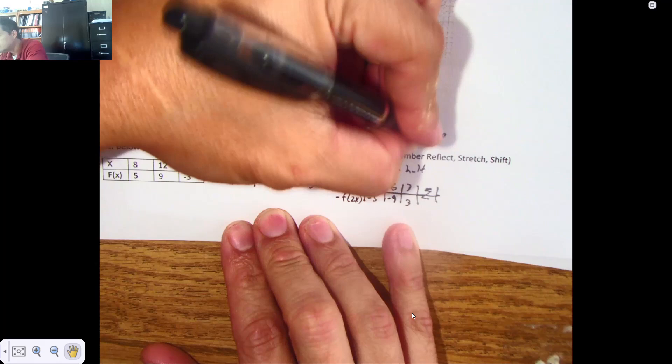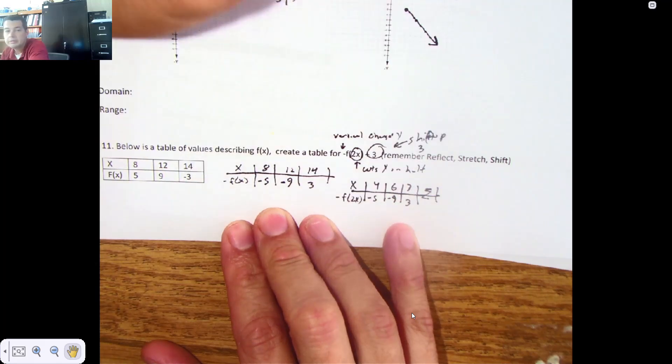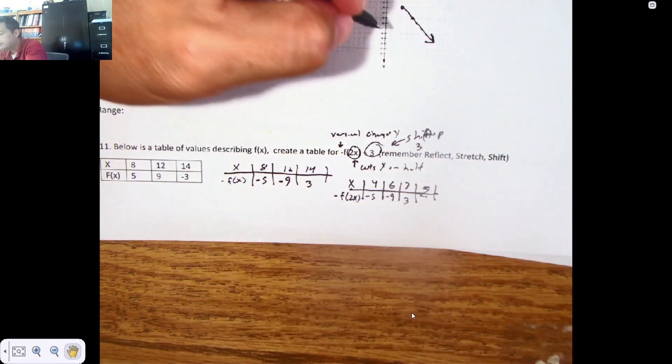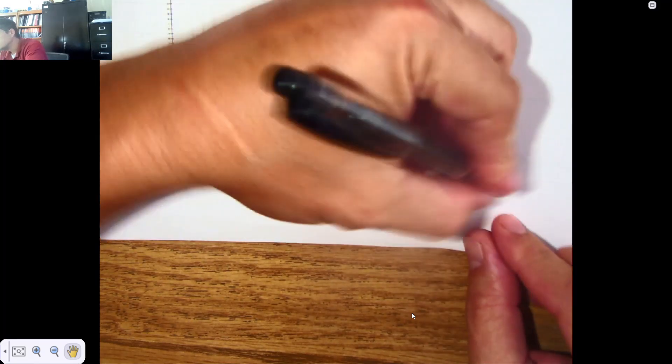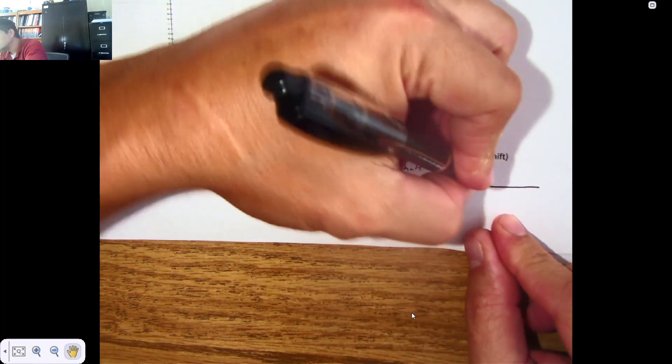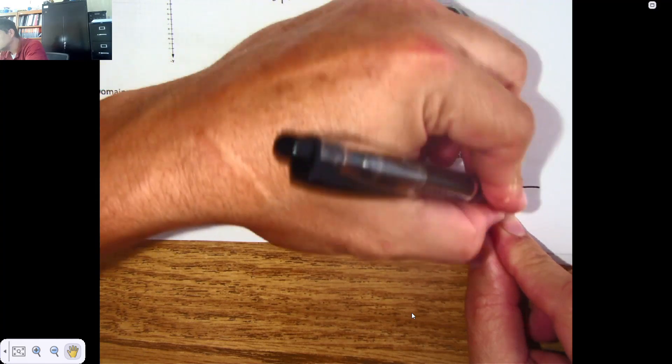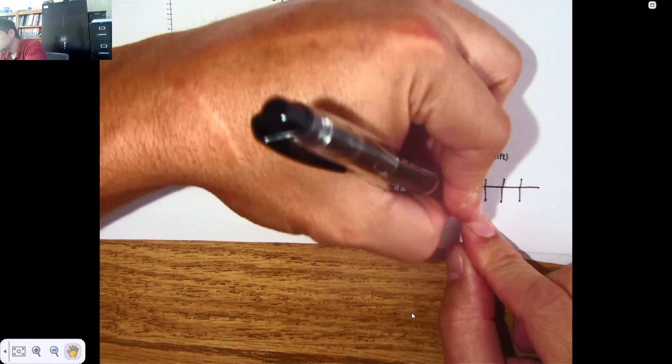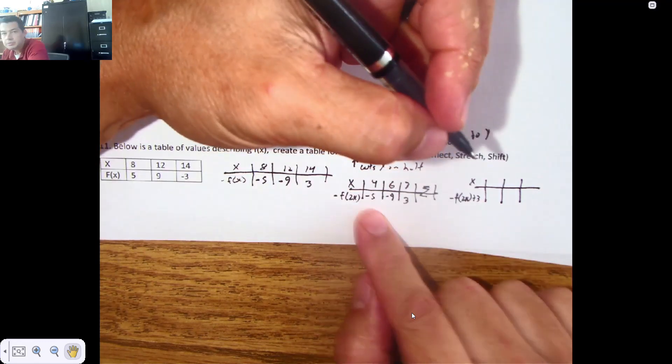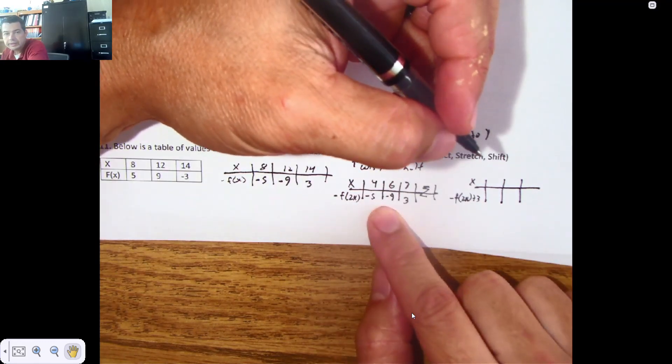And the last thing I'm going to do is I'm going to do this shift up 3. Shift. Can't write. It's too early in the morning. That's going to add 3 to y. So I'm going to take all these y values and add 3.